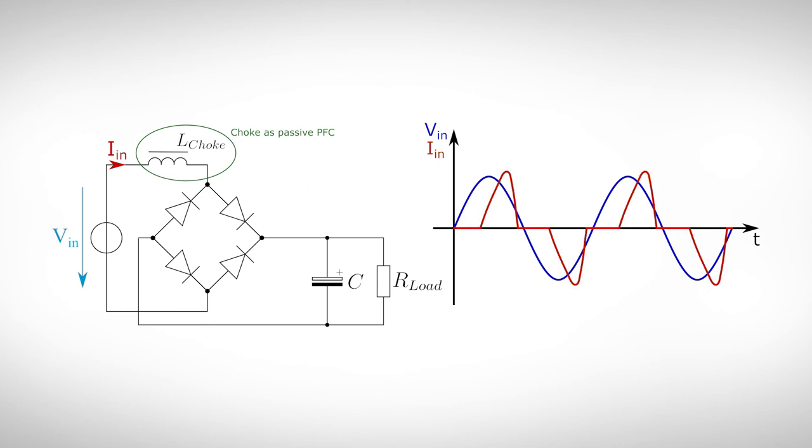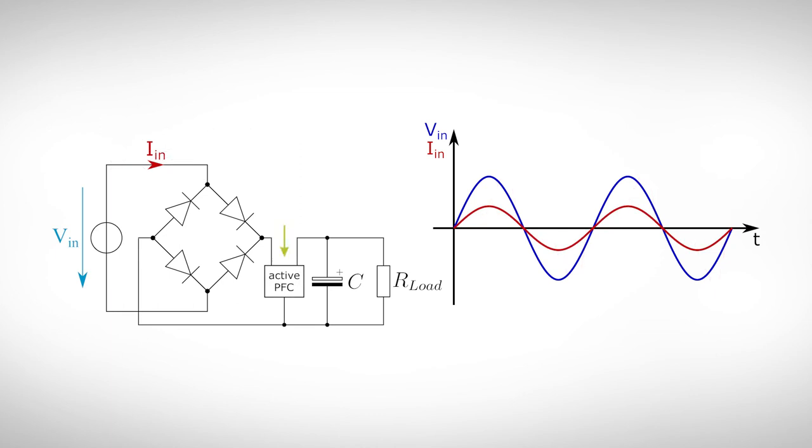To get a better correction, active PFCs are used. Basically, we use a second switched mode power supply to generate a continuous input current, for example a boost converter. This converter loads our intermediate capacitor, which feeds the actual power supply. The discontinuous current of the second power supply does not affect the input current. The boost converter stage can also compensate changes in the input voltage. This is ideal if we want to use our power supply with different line voltages.